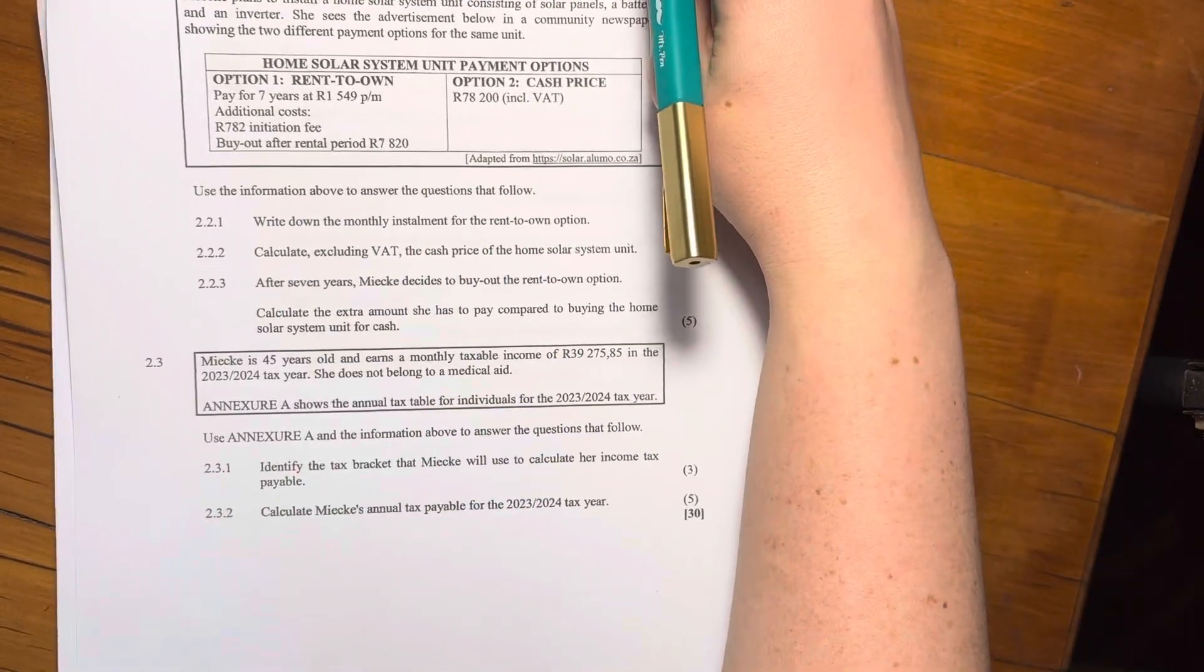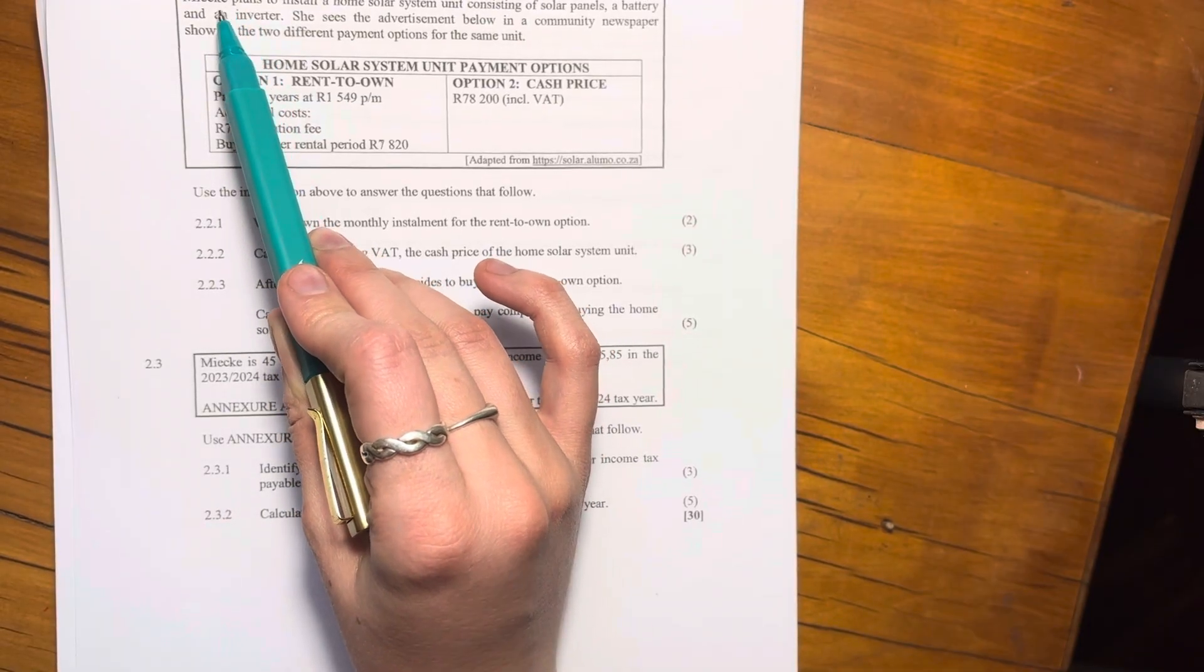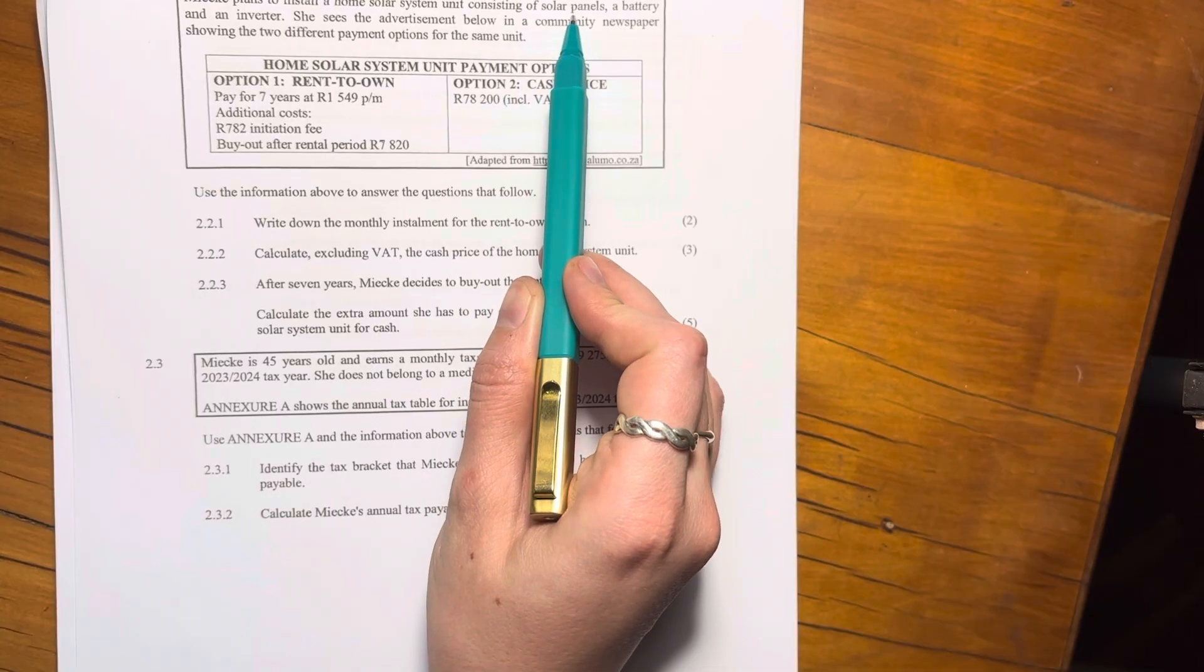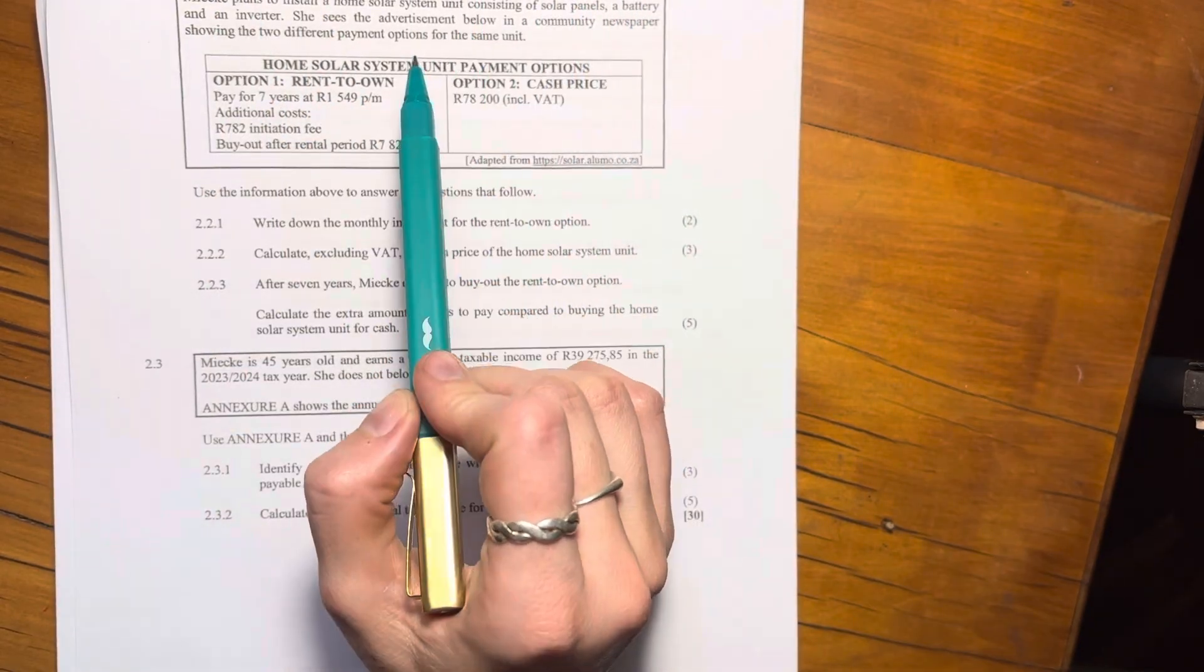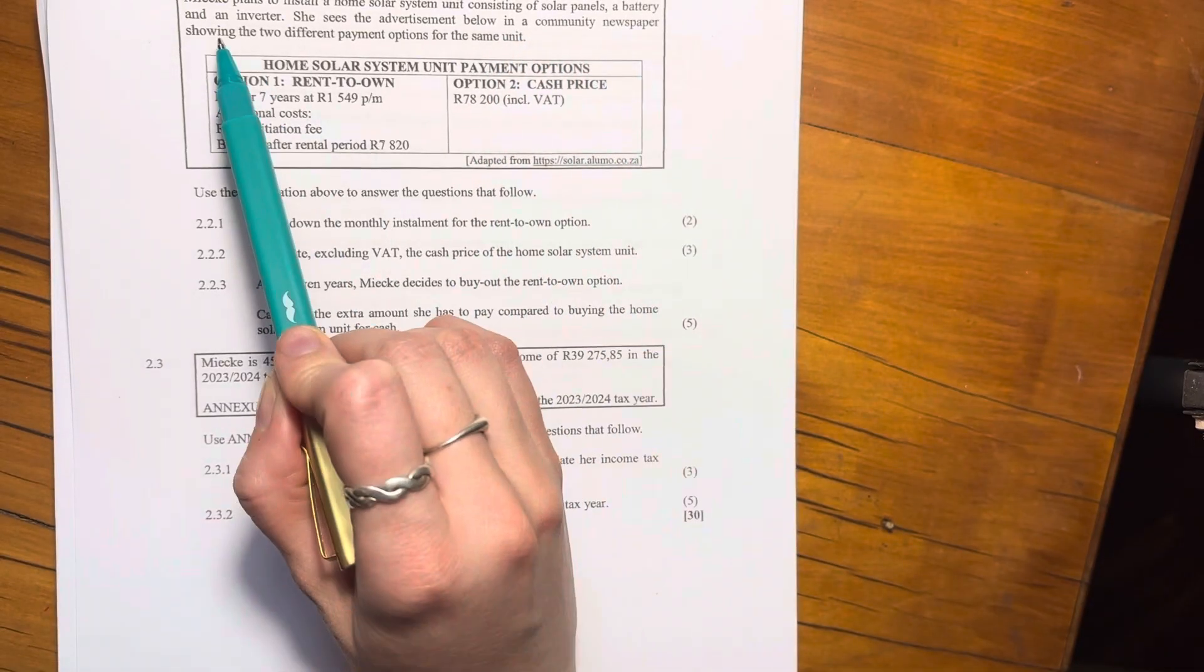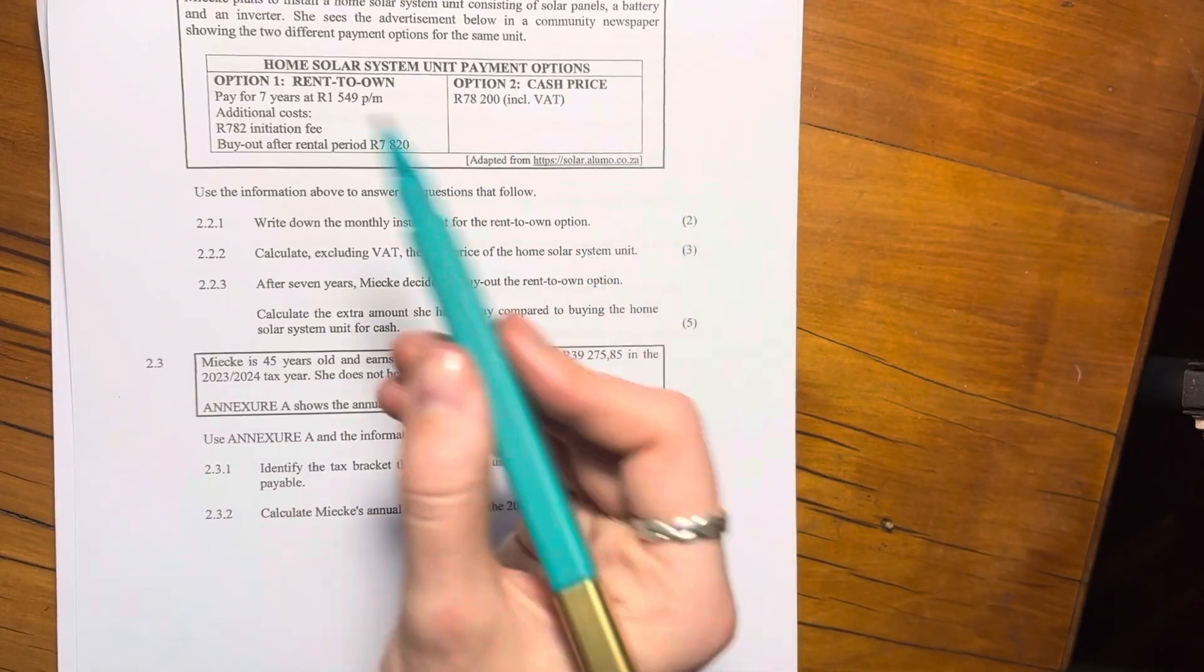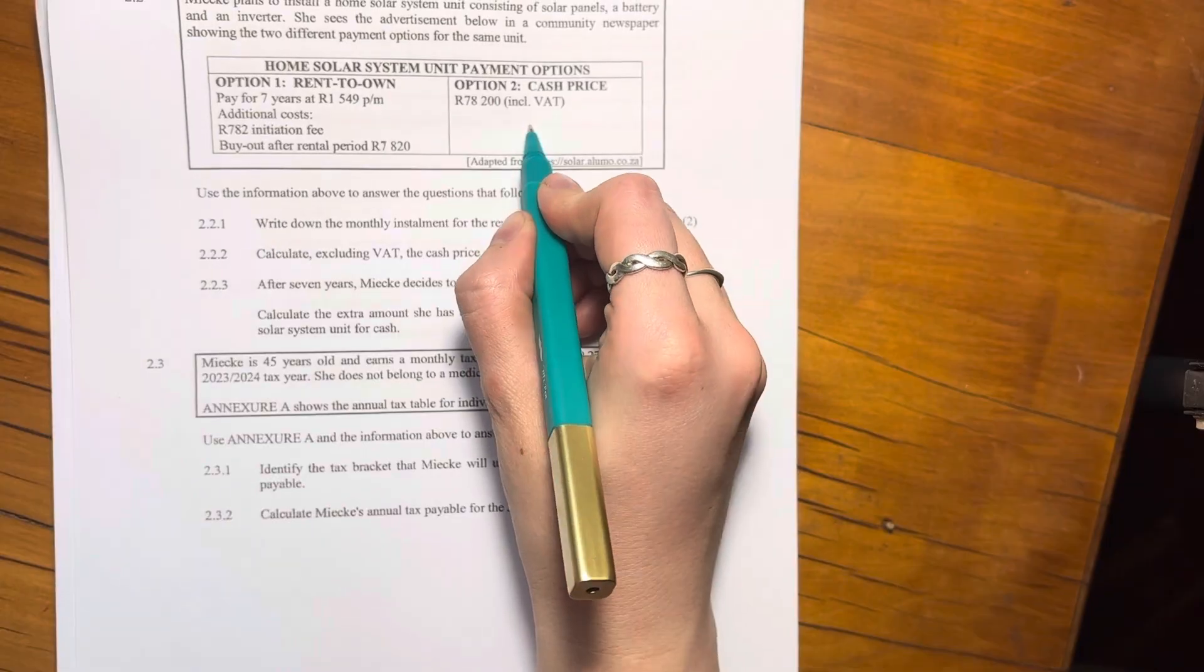Okay, let's look at question 2.2. So again, we're still with Maycare. Maycare plans to install a home solar system unit consisting of solar panels, a battery, and an inverter. She sees the advertisement below in a community newspaper showing the two different payment options for the same unit. So same unit, one is rent-to-own and one is cash-priced. So this is where you just pay it up front.